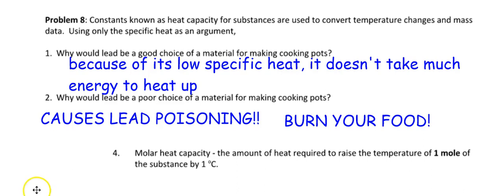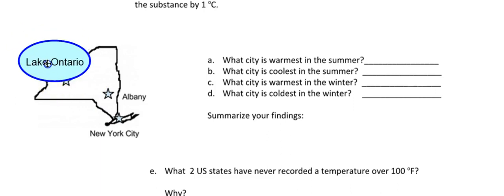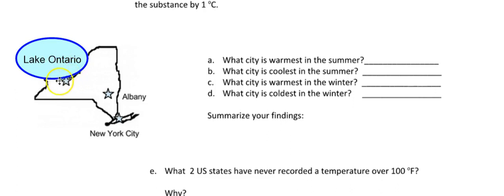Now we have molar heat capacity — the amount of heat required to raise one mole of a substance by one degree. Let me give a geography lesson about New York. I'm from Rochester, New York, which sits right on Lake Ontario, one of the Great Lakes. Albany is the state capital with the Hudson River flowing through it. New York City is surrounded by the Atlantic Ocean.